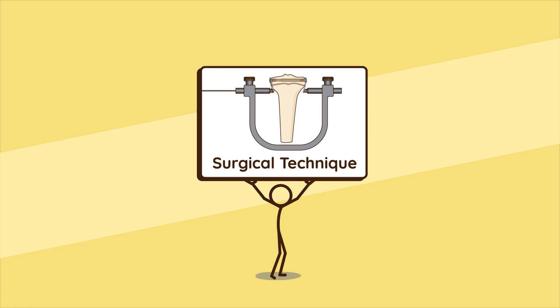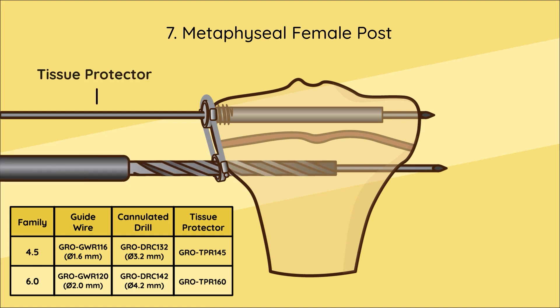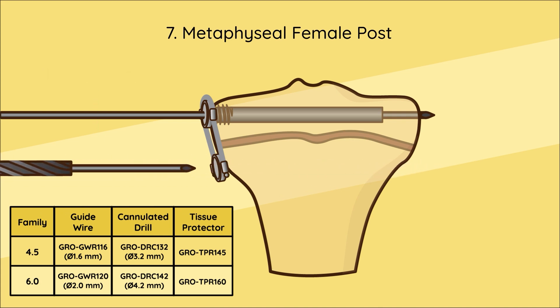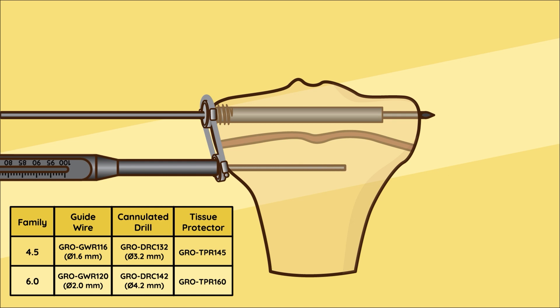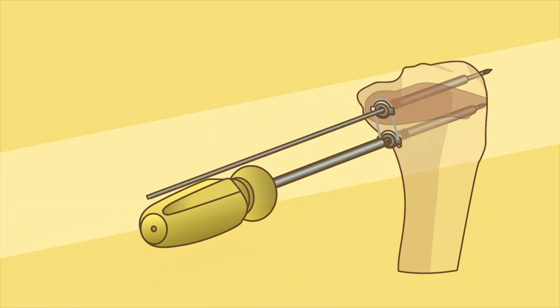Step seven - metaphyseal female post: Prepare the metaphyseal channel. Measure the length of the channel with the depth gauge to select the metaphyseal post assembly length. Insert the metaphyseal female post.